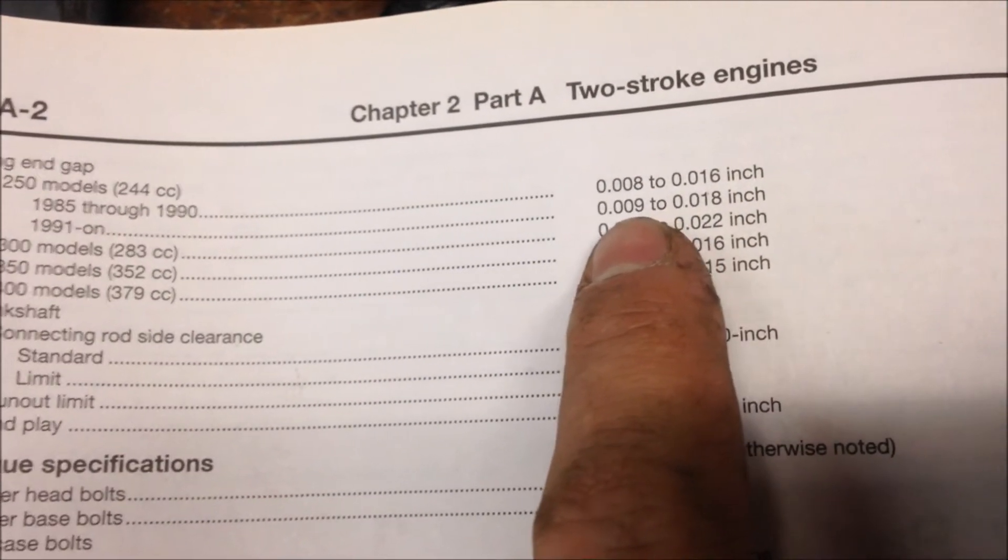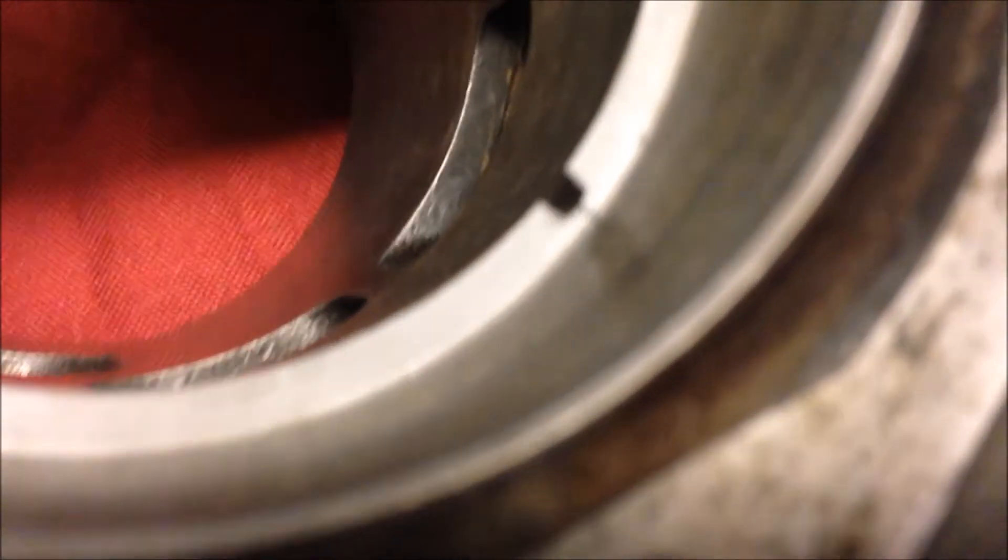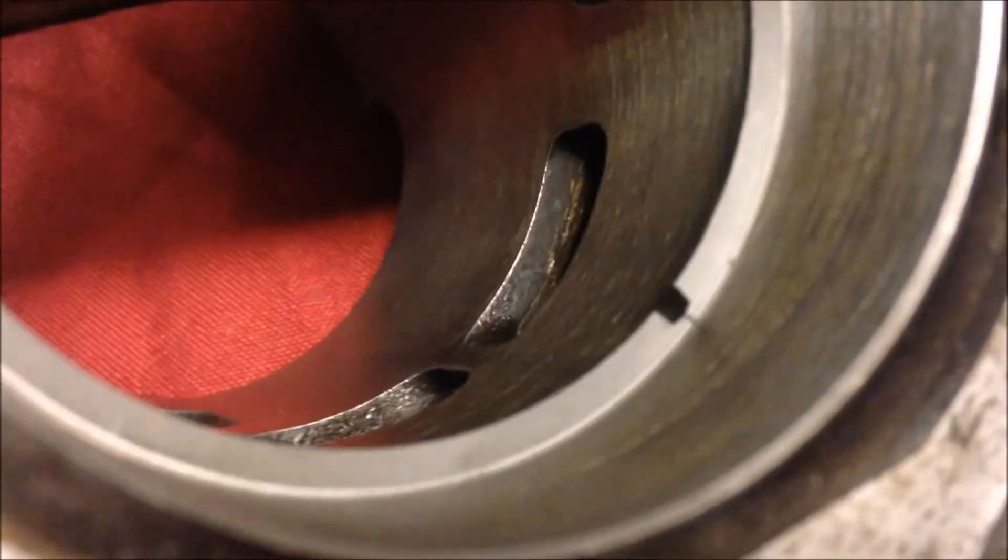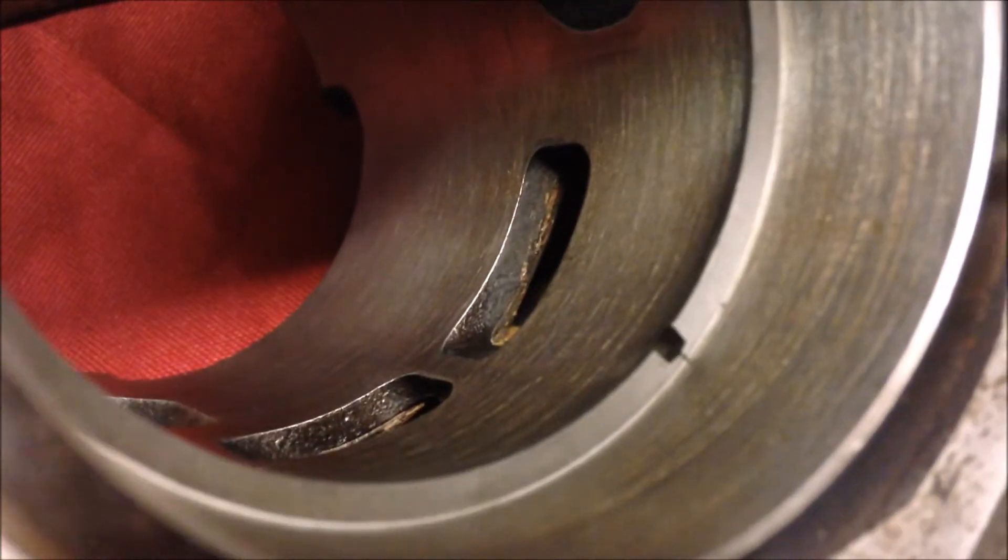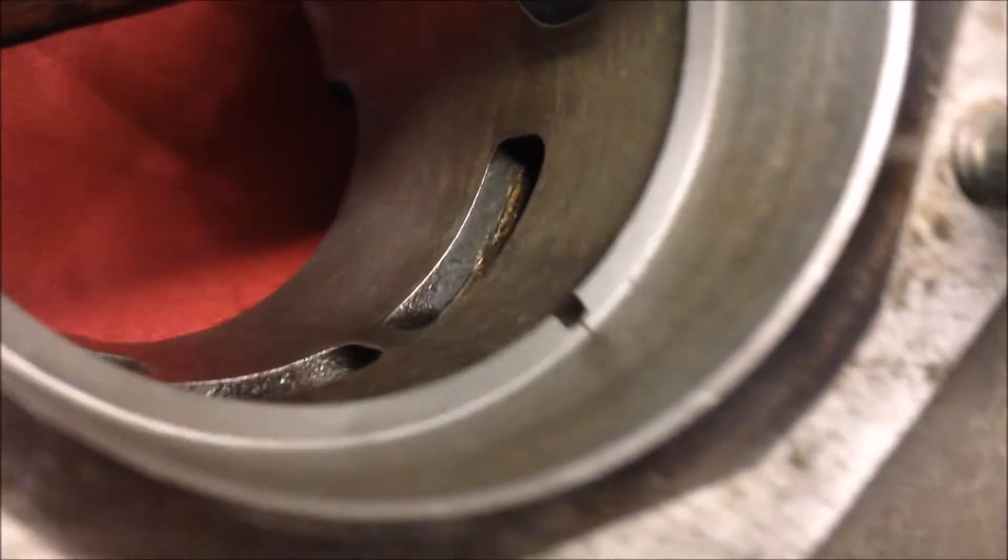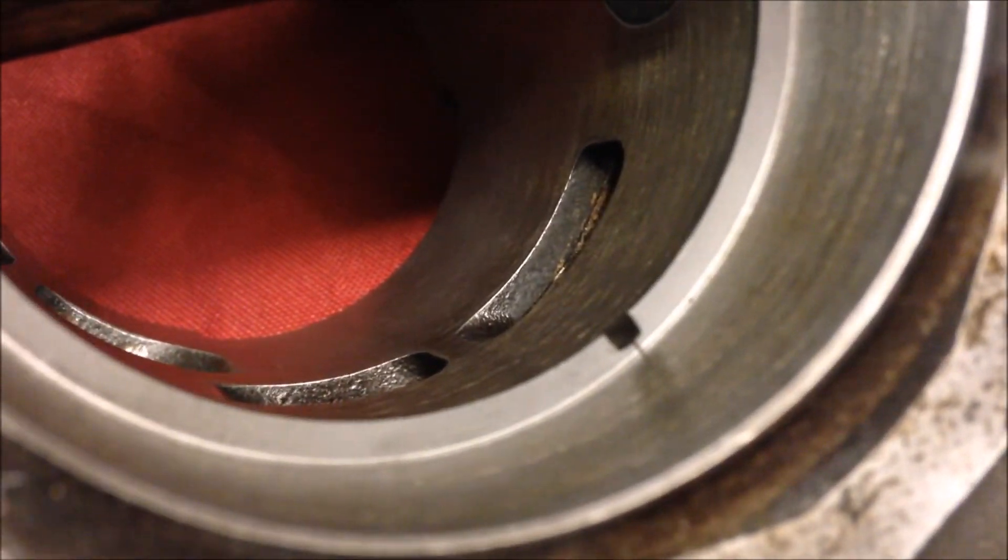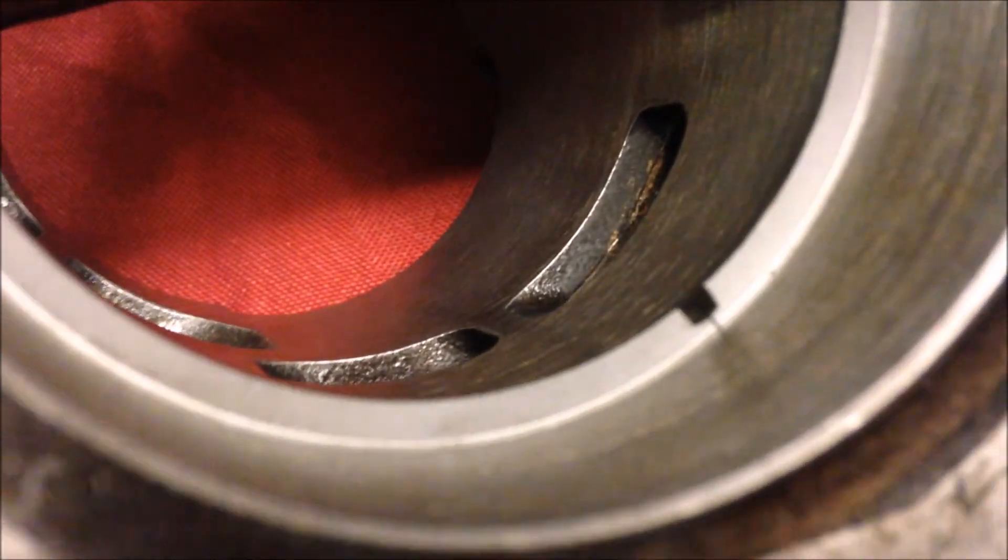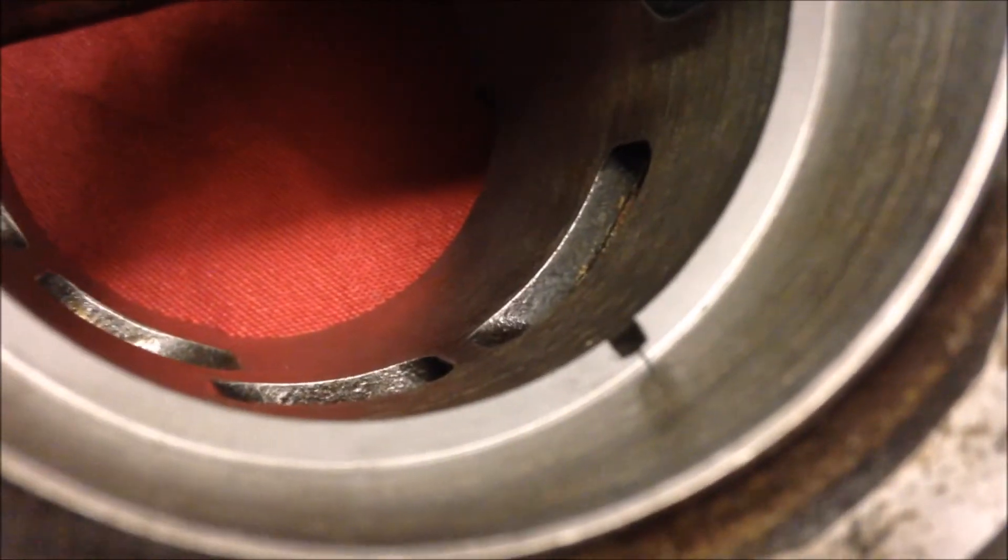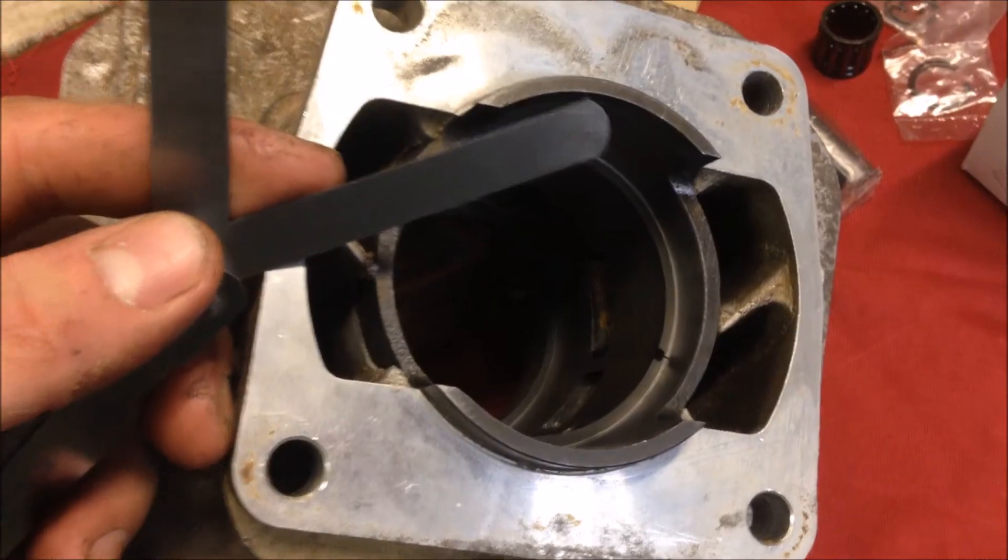If you do check that gap and you find out that it is too large, what you'll have to do is go up in size in your piston and rings to the next size. If it's too small, what you'll have to do is take a file and you can file that out to get the desired ring end gap that you need.